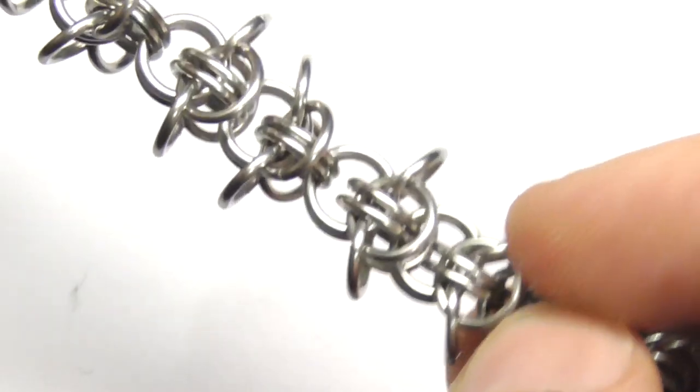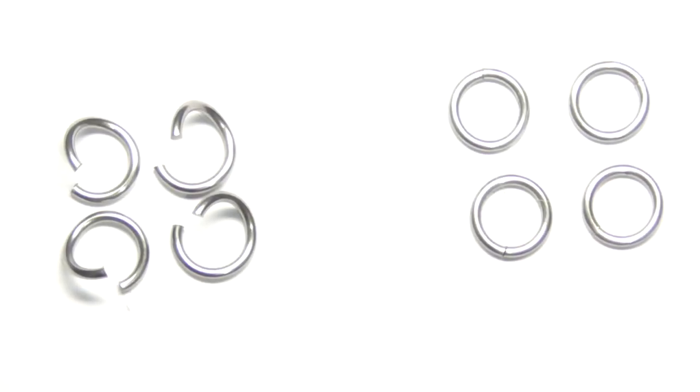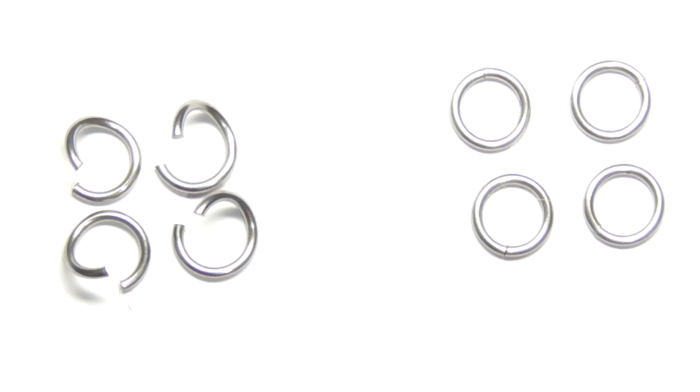Now let's proceed to the tutorial. Well let's start. For each element of Ficus weave we will need eight rings - four open rings and four closed rings.